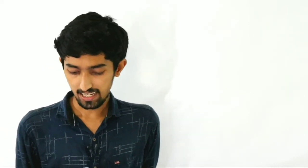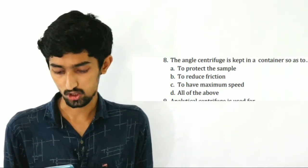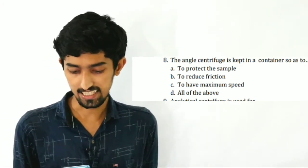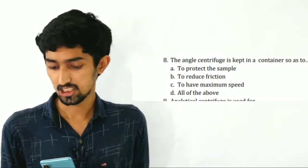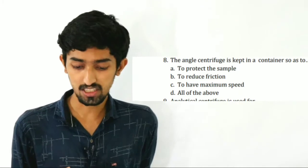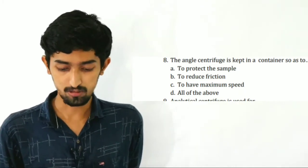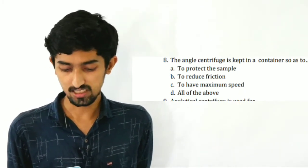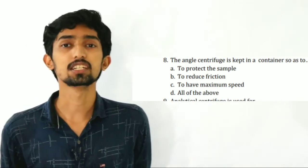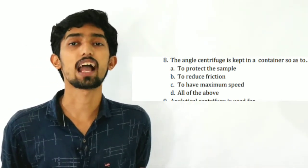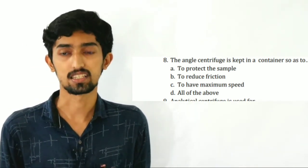The angle centrifuge is kept in a container so as to — Option A: To protect the sample. Option B: To reduce friction. Option C: To have maximum speed. Option D: All of the above. The answer is All of the above — the angle centrifuge is kept in a container to protect the sample, reduce friction, and have maximum speed.